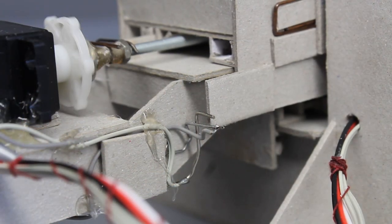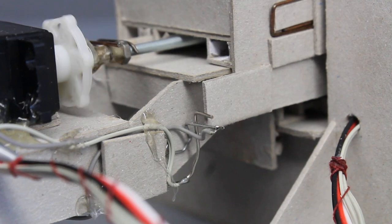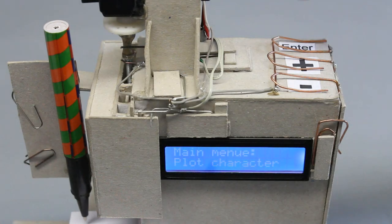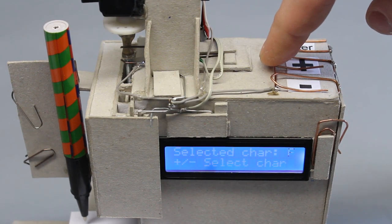Whenever the machine is powered, all axes move to the end switches. Three push buttons made of paper clips are used to operate the machine. The screen is a tiny 2x16 character LCD.